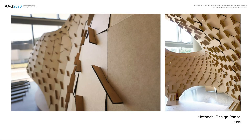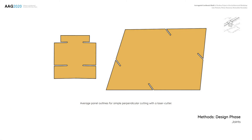A traditional cross-halving joint used in this manner results in an angular cut through the material thickness, due to the inherent geometrical properties of a double curved surface. Because of the two main constraints — thin sheet cardboard and a simple laser cutter — an approximation for a two-dimensional cut was needed. To exploit the potential of friction within the joint, offset tolerances for depth and width had to be defined through thorough physical trials. The critical aspect was the precise material burn parameter using specific laser cutter settings, checked and adjusted before each cutting segment, to ensure fast and precise insertion while providing enough friction to stabilize the structure during assembly.